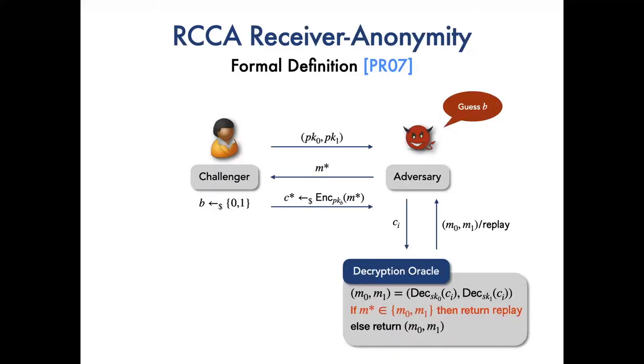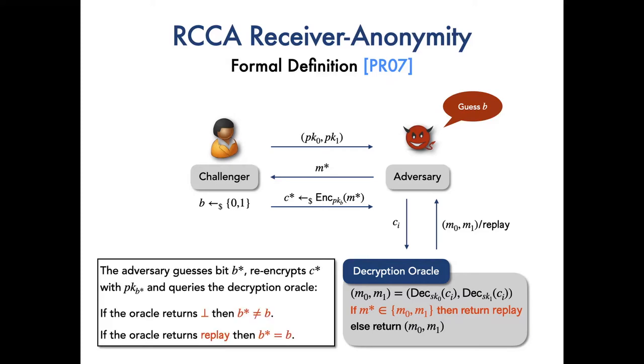The main technical challenge of achieving RCCA receiver anonymity arises from the fact that the decryption oracle in the game would output replay if one of the decryption results equals to the challenge plaintext M star. So the adversary can guess the bit B star and encrypts the challenge C star with PK B star and queries the decryption oracle to verify its guess. If it guessed B correctly, the decryption oracle would return abort. Otherwise, if the adversary guessed B incorrectly, the decryption oracle would return replay.